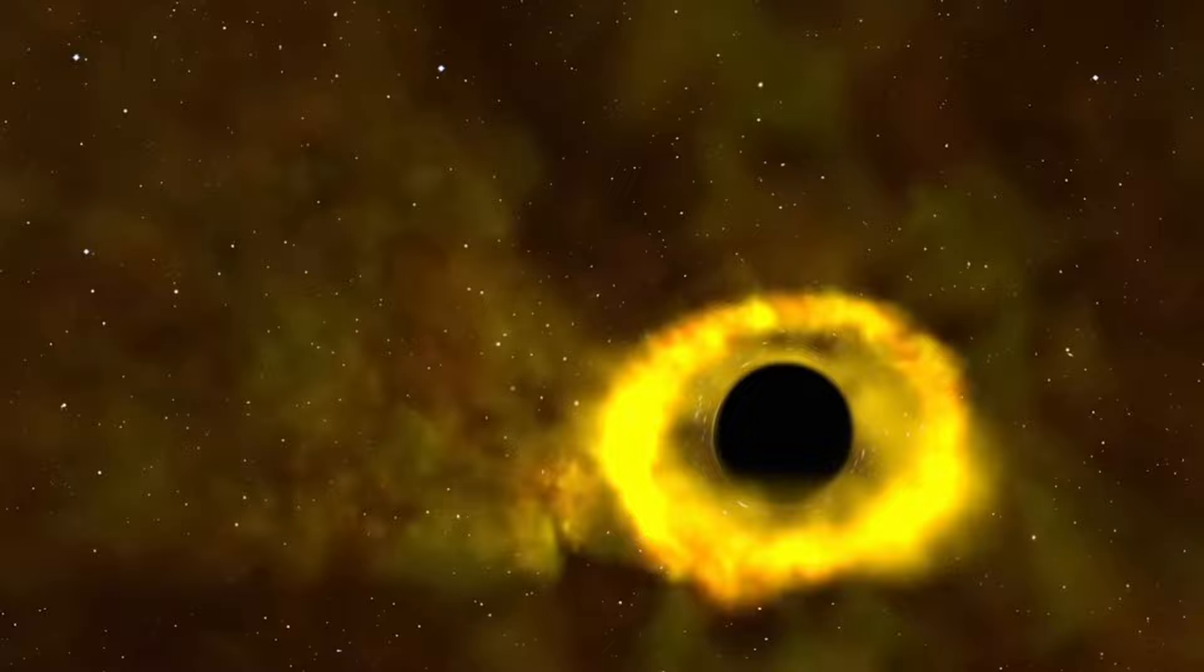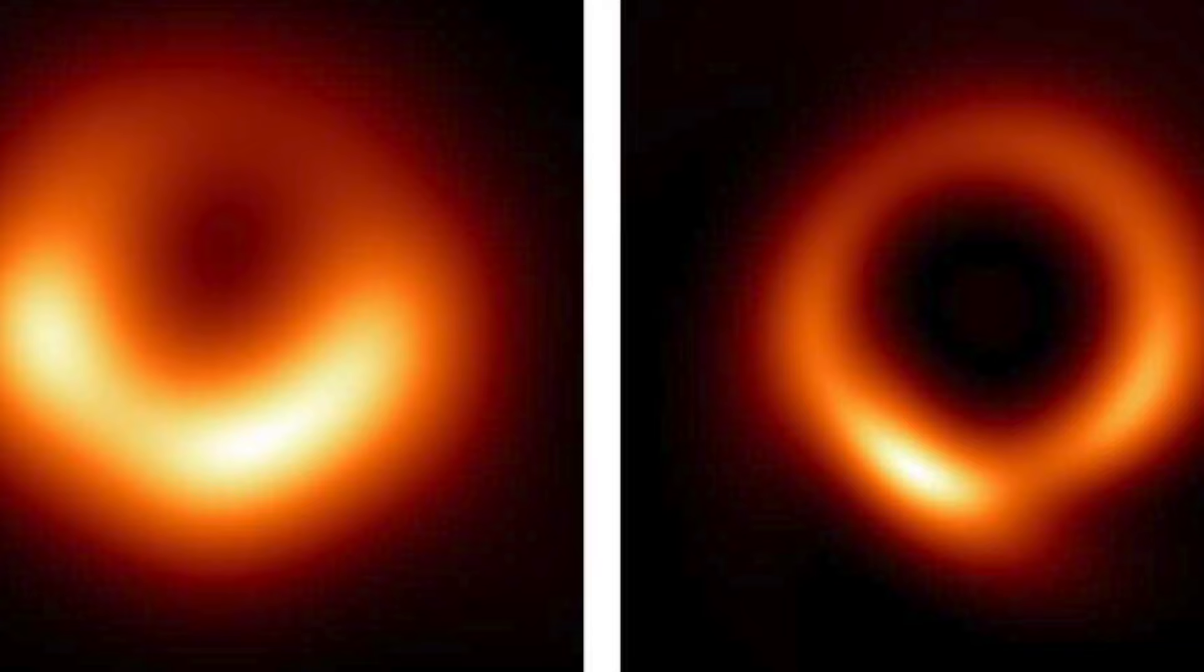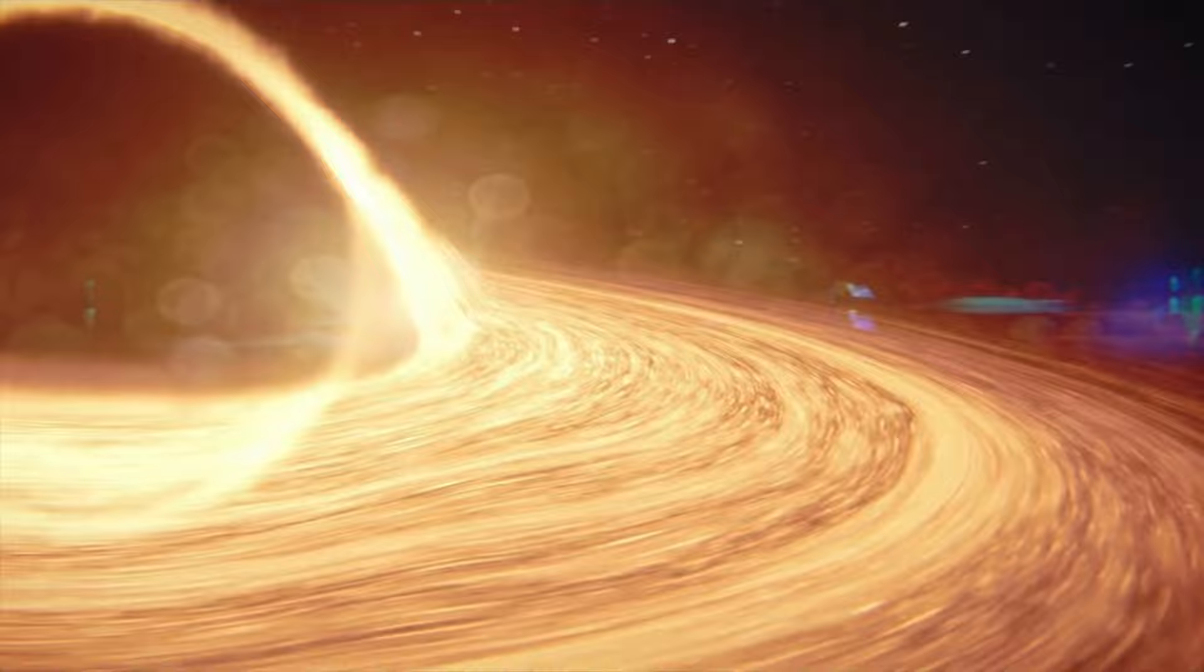Because of the effect of dust and gas causing a significant 25-magnitude extinction between the source and Earth, astronomers have not been able to observe Sagittarius A-star in the optical spectrum.